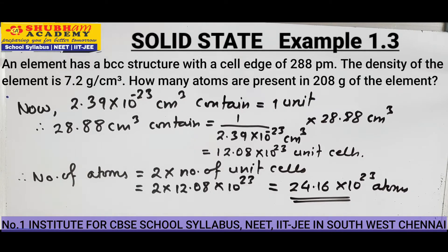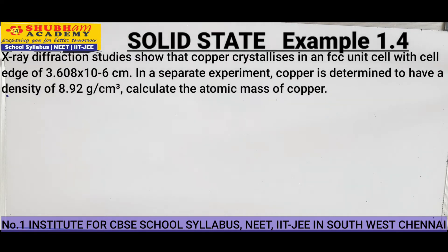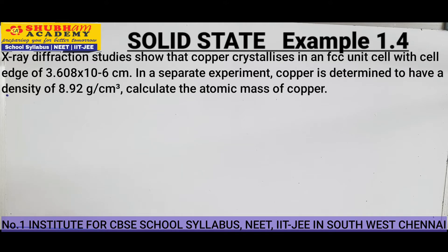Moving on to the next example. The question says: X-ray diffraction studies show that copper crystallizes in an FCC unit cell with edge length of 3.608 into 10 to the power minus 8 centimeter. In a separate experiment, copper is determined to have a density of 8.92 gram per centimeter cube. Calculate the atomic mass of copper.